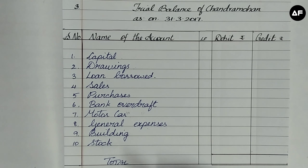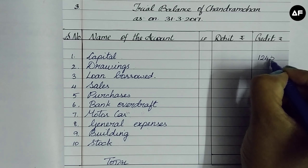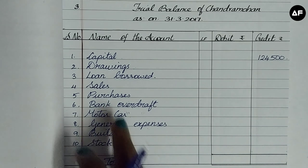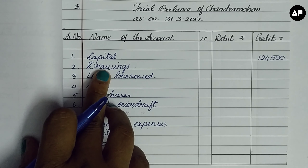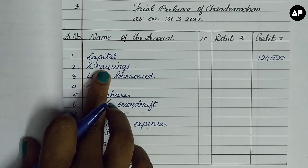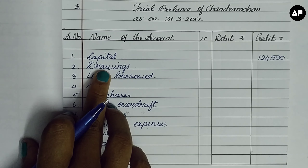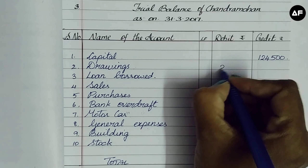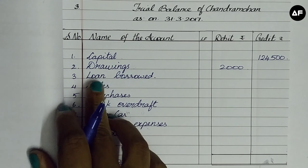The first item is capital of 1,24,500 — capital is a credit, therefore put in the credit column as 1,24,500. The counterpart of capital is drawings. Drawings represent the amount withdrawn by the proprietor, so drawings of 2,000 is going to come to the debit column.